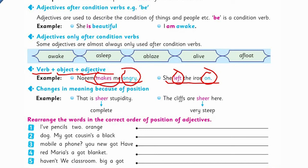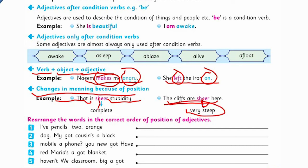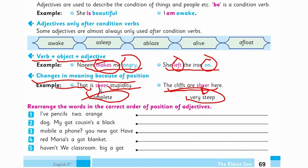Change in meaning because of position — for example, 'That is sheer stupidity' versus 'The cliffs are sheer.' Here in the first sentence 'sheer' means complete, and in the second sentence 'sheer' means very steep — same word, different meaning depending on position.